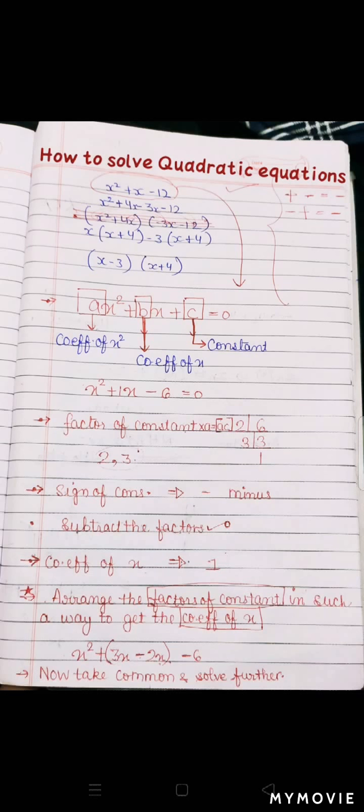Next step hota hai: arranging of the factors of the constant in such a way to get the coefficient of x. Toh humein inका arrangement karna hai. Kyunki humein upar chahiye 1x, toh hum 3 aur 2 ko arrange karenge in the form 3x minus 2x. Dekhein: x² apni jagah par aise hi rahega, plus apni jagah par. 1x ko hum gain karenge when we subtract 2x from 3x. Toh isको humne aise liya: 3x minus 2x, aur minus 6 jo humara constant tha woh same aise hi rahega.